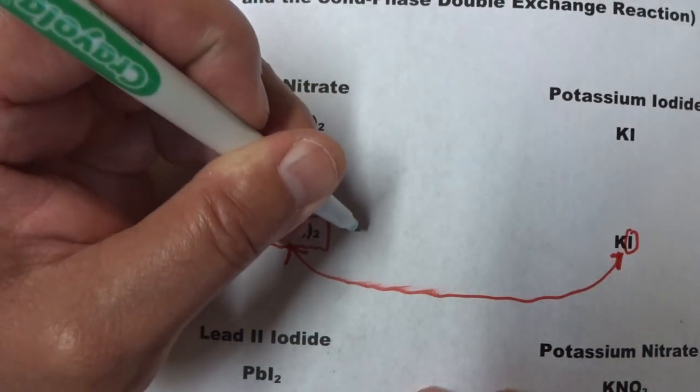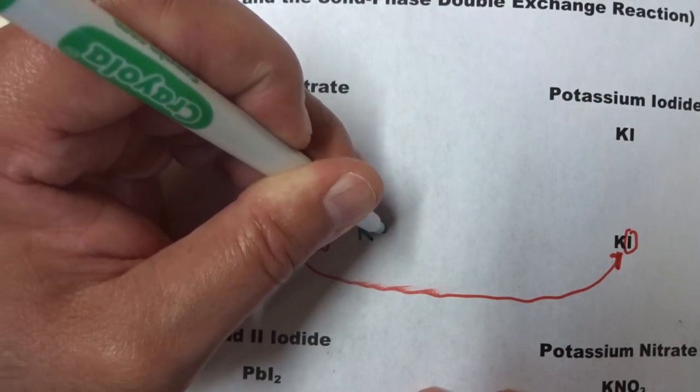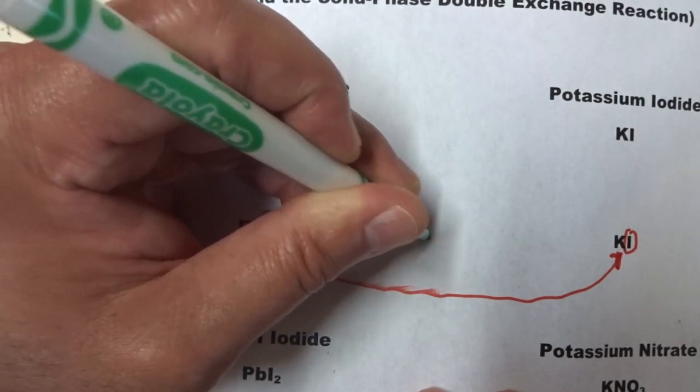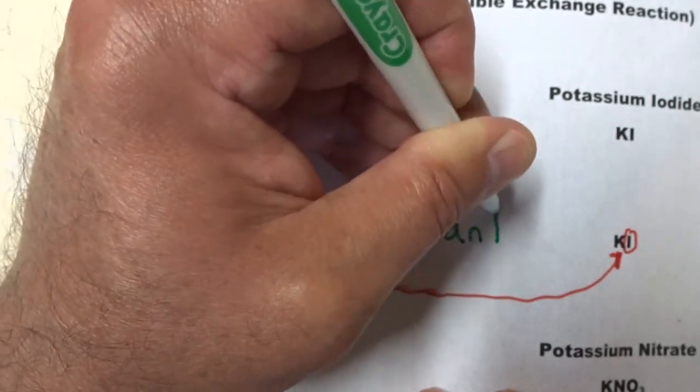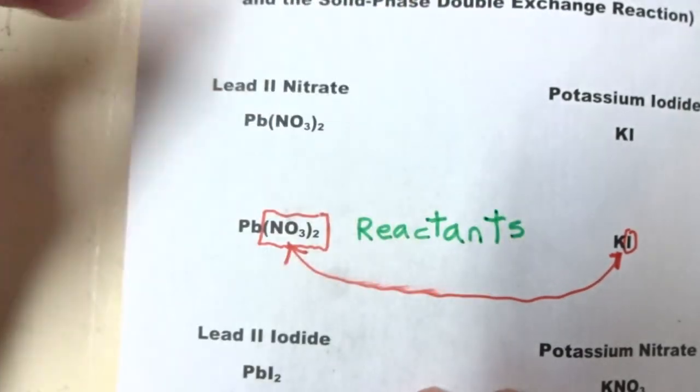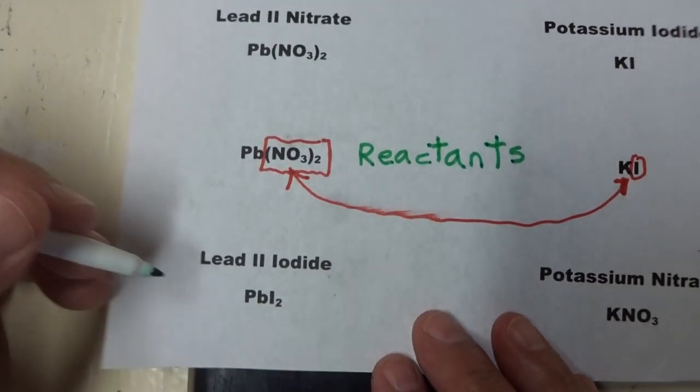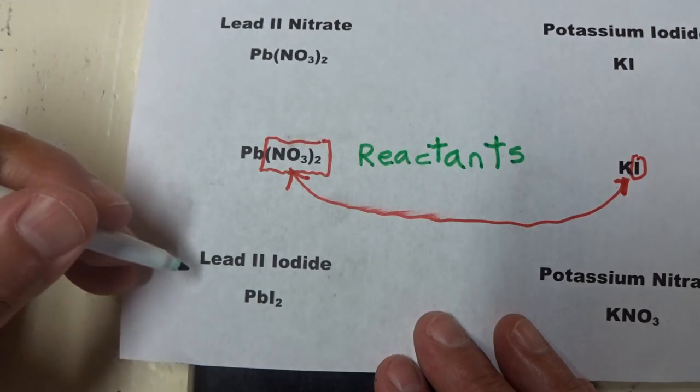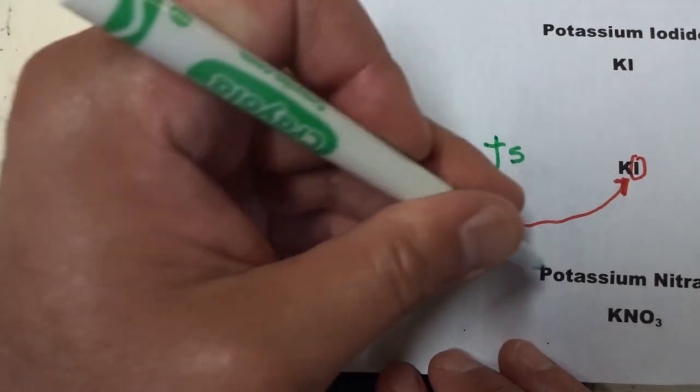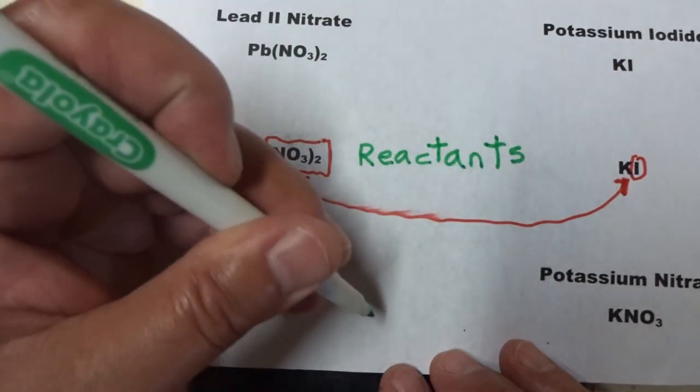These are the reactants. And our products from the lead nitrate reacting with the potassium iodide are lead iodide and potassium nitrate. These are our products.